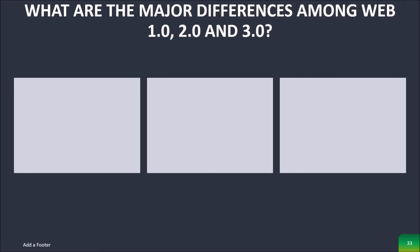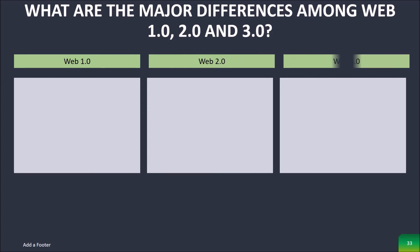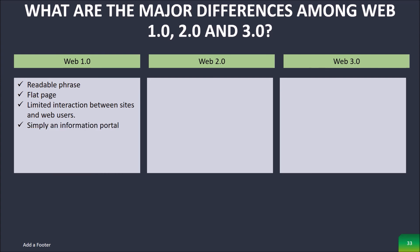What are the major differences among Web 1.0, 2.0, and 3.0? Web 1.0 is the readable phase of the World Wide Web with flat data. In Web 1.0, there is only limited interaction between sites and web users. Web 1.0 is simply an information portal where users passively receive information without being given the opportunity to post reviews, comments, or give feedback.